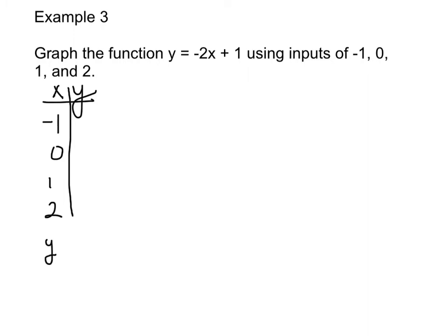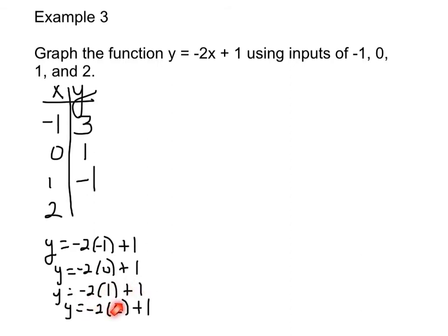Now we just plug in all of those values for x. If you wanted to show all those steps and take these x values and plug them in for each of your x values in your function, you can do that. But as an 8th grader, you can do this in your head. Negative 2 times negative 1 is 2, plus 1 gives you 3. Negative 2 times 0 is 0, plus 1 is 1. Negative 2 times 1 is negative 2, plus 1 is negative 1. Negative 2 times 2 is negative 4, plus 1 is negative 3. There's your input-output table.